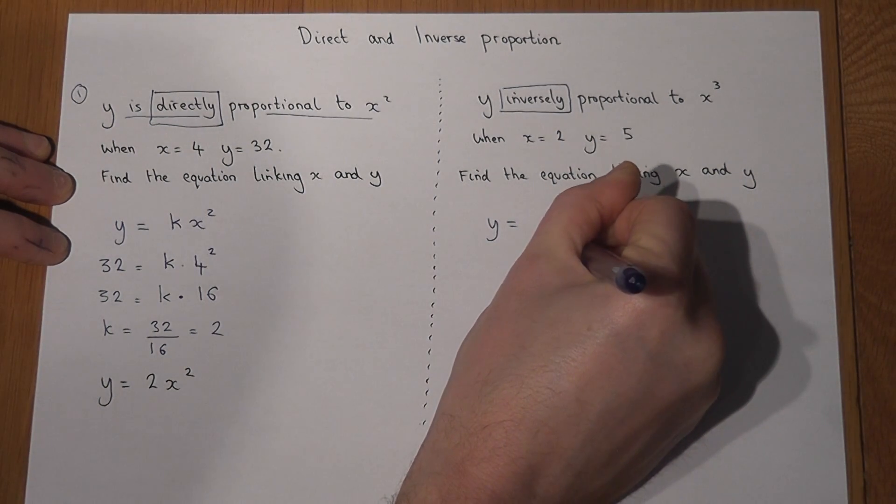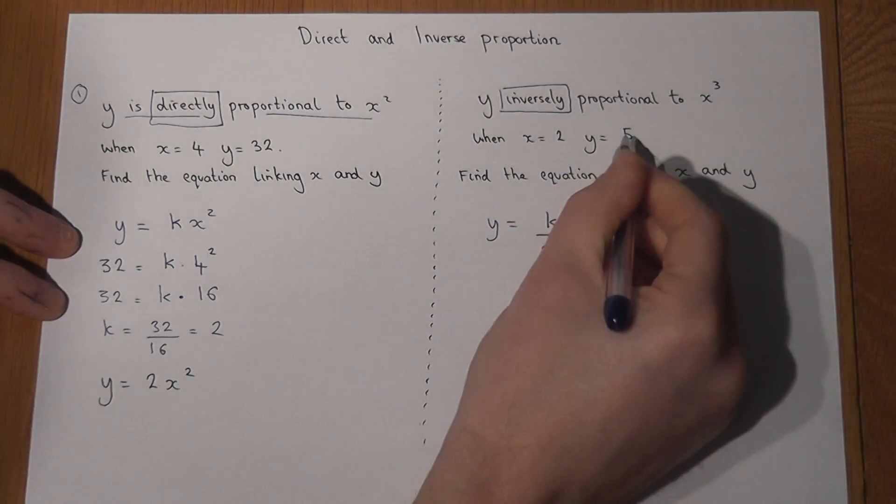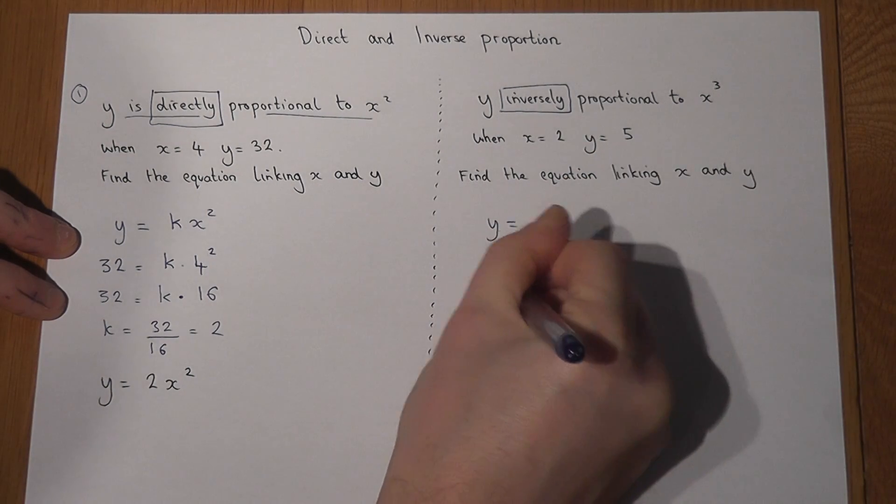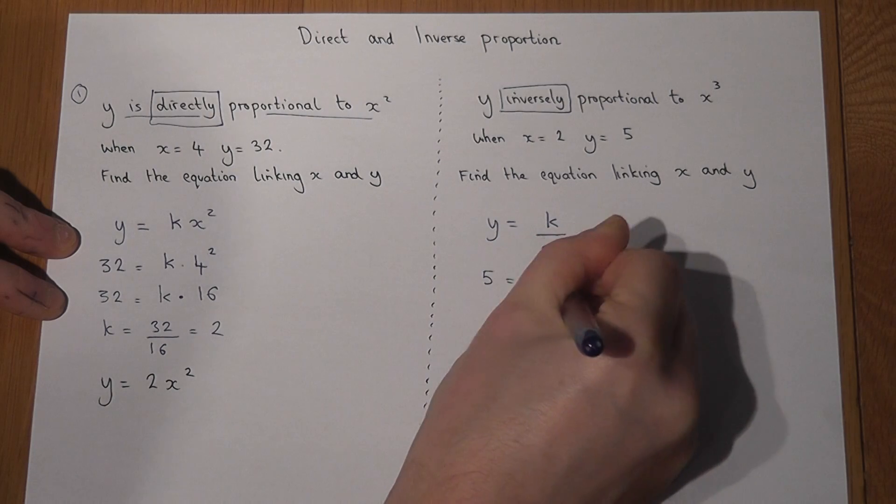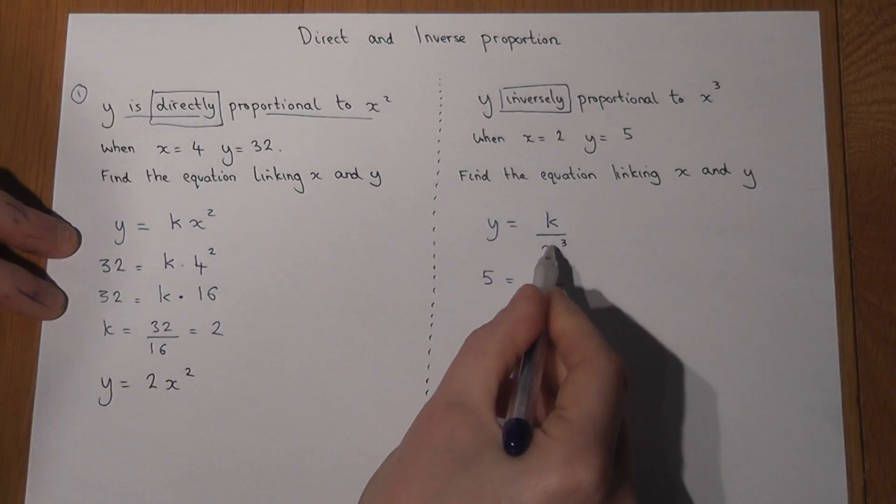We then do the same process. Y is 5, we don't know k yet, but x is 2.